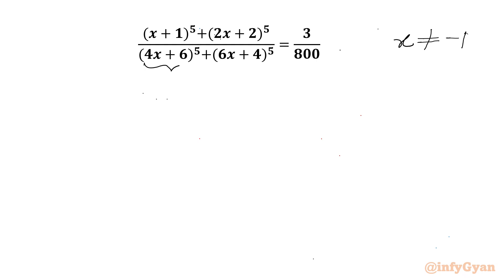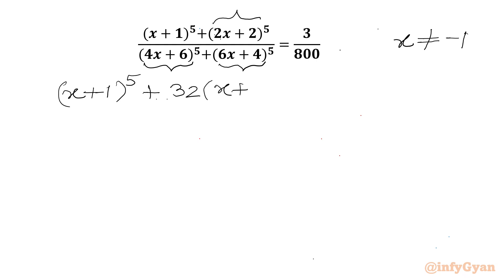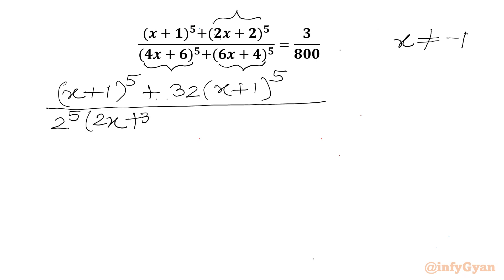Now I can take 2 common from this bracket, so it will come out as 2 to the power 5. Taking 2 common from here also, and 2 common from here also. So I will write the equation as (x+1) whole power 5. Then we can write 2 power 5, which is 32, times (x+1) whole power 5. I will take 2 power 5 as a coefficient; in the bracket we will get (2x+3) whole power 5 plus 2 power 5 times (3x+2) whole power 5. The RHS is 3 over 800.